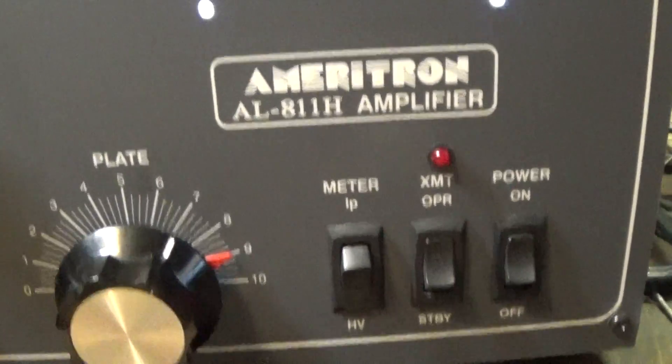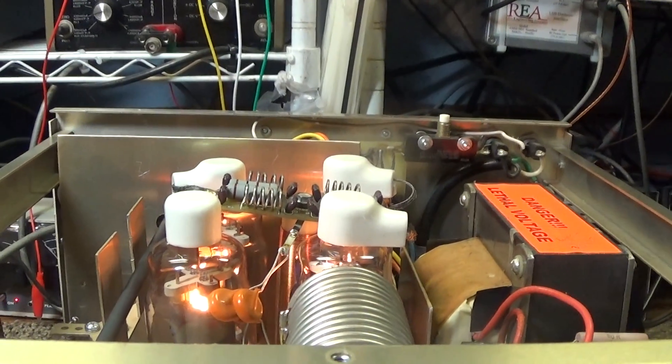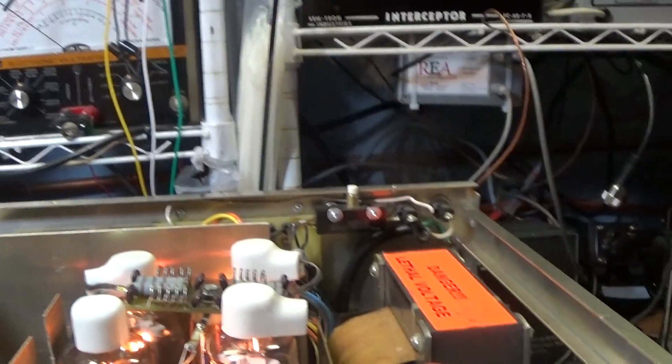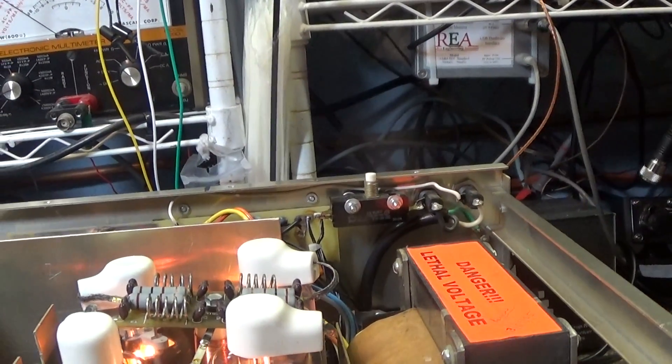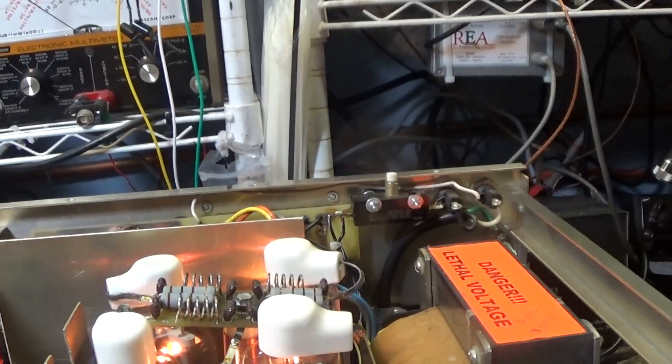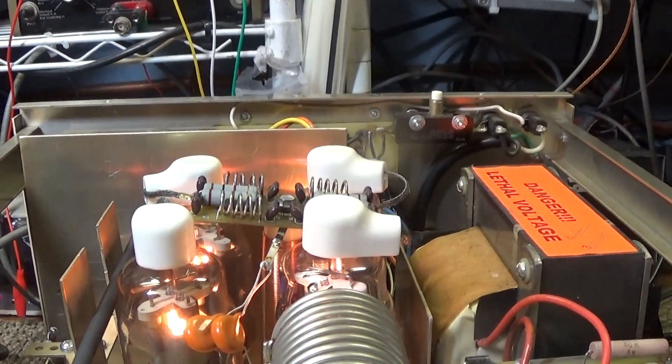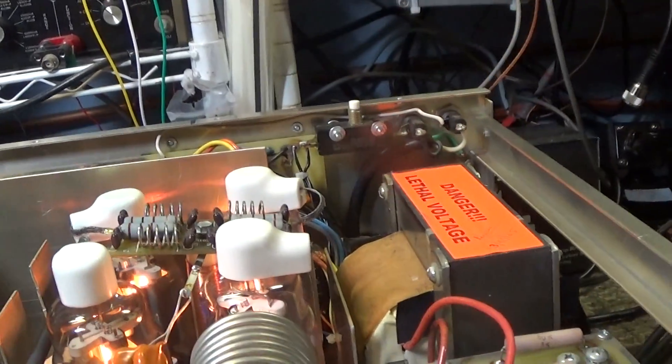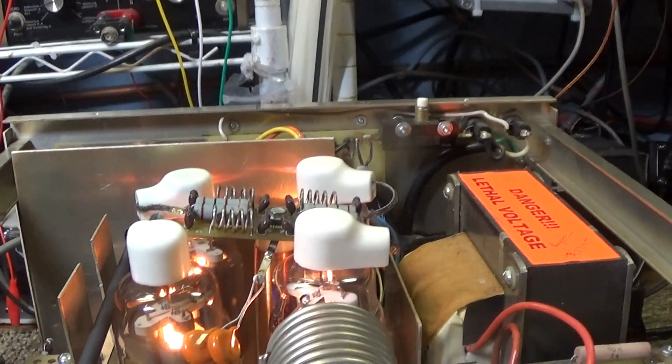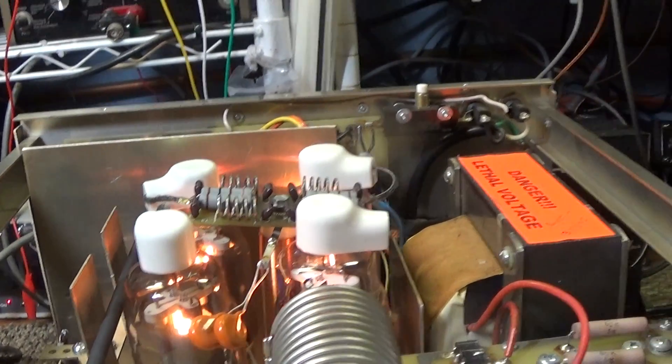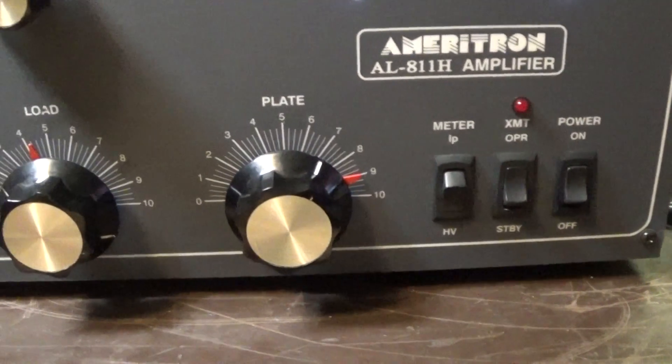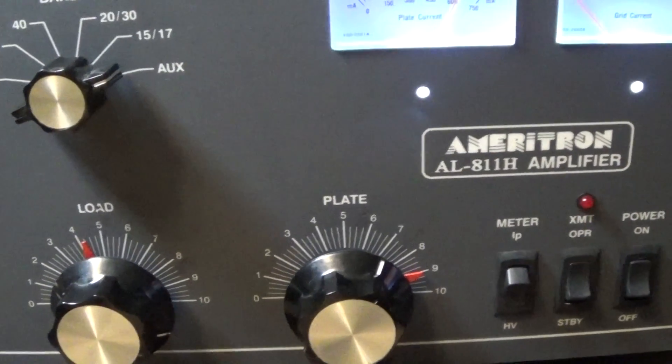It uses four 811A tubes, however 572B tube is a direct fit that produces more power, so this one has a mismatched set of 572B's in it. One pair is like new and the other set is not quite full power, so we got a mismatched set in there of 572B's because I didn't have 811A's and it didn't come with any. The 572B's run cooler anyway.